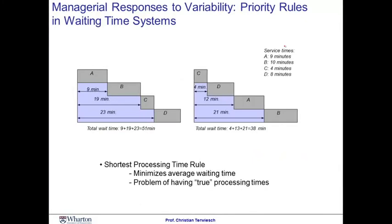One alternative way of sequencing customers is based on the shortest processing time rule. Let me illustrate the shortest processing time rule with the following example. Imagine there are four things I have to do: Tasks A, B, C, and D.